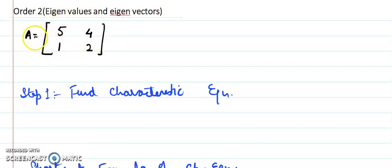Here I have taken A matrix where the first row is 5, 4 and the second row is 1, 2. Now before I talk about what are the steps, let's see what is the main target of this topic to find eigenvalues and eigenvectors.